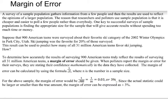Suppose that 900 American teens were surveyed about their favorite ski category of the 2002 Winter Olympics in Park City, Utah. Ski jumping was the favorite for 20 percent of those surveyed. This result can be used to predict how many of the 31 million American teens favored ski jumping. To determine how accurately surveying 900 teens reflects all 31 million, a margin of error should be given. When pollsters report the margin of error, they are stating their mathematical confidence in the data collected.